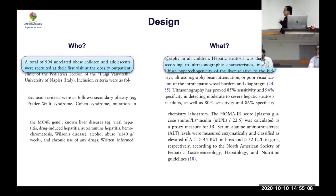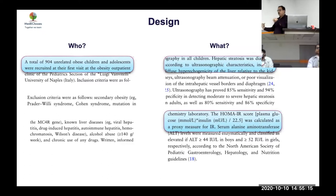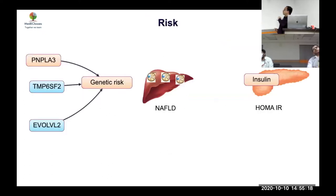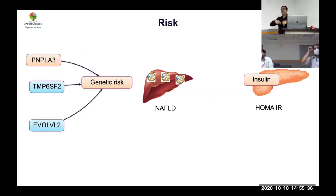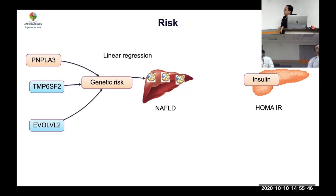These were straightforward obesity patients. An ultrasound was performed by the same sonographer, grading fatty liver — they focused on fatty liver, not NASH. Insulin resistance was measured using HOMA-IR. Based on the three genes, a genetic risk score was created; then a linear regression of this genetic risk against NAFLD was performed. This regression coefficient was called beta X — representing how much the genetic risk affects fatty liver.